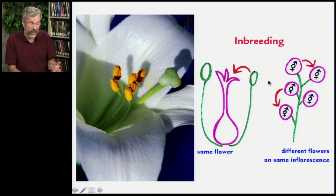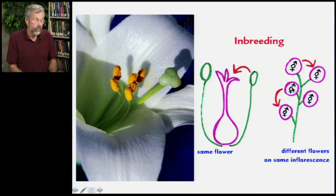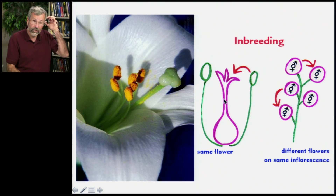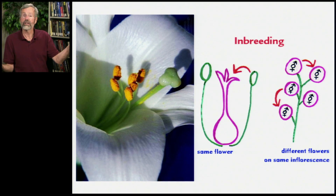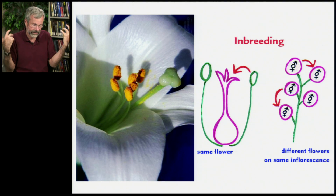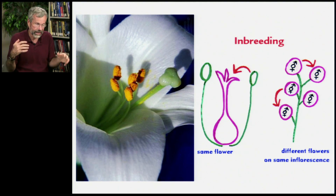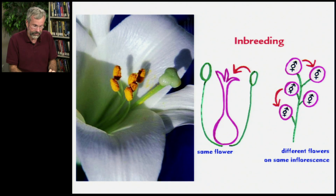There are some flowers that actually have prohibitions — like, it's gross, I'm not going to mate with myself — but a flower on this limb might mate with a flower on another limb. It's still genetically the same individual, but they kind of take a half-hearted attempt not to mess around with themselves.